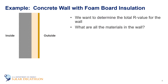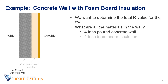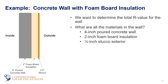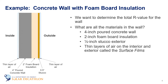Looking from the top down, we can see that this wall consists of four inches of concrete, two inches of foam board insulation, and about a half an inch of stucco on the exterior. What we don't see is that there is a tiny layer of air on the outside and on the inside of the wall that is caused by stagnant air and the convection coefficient.